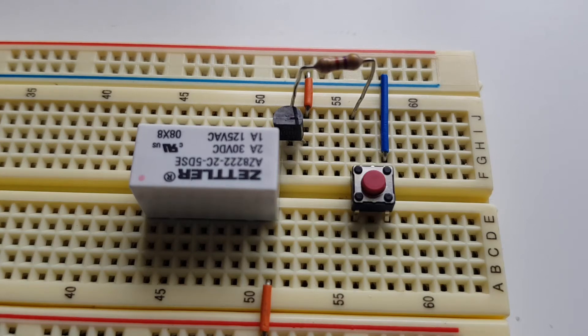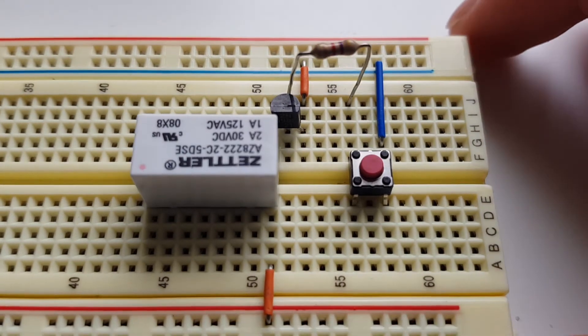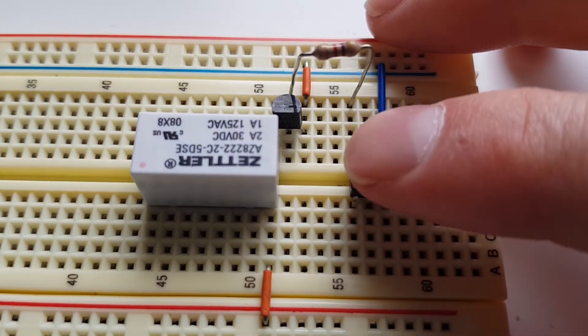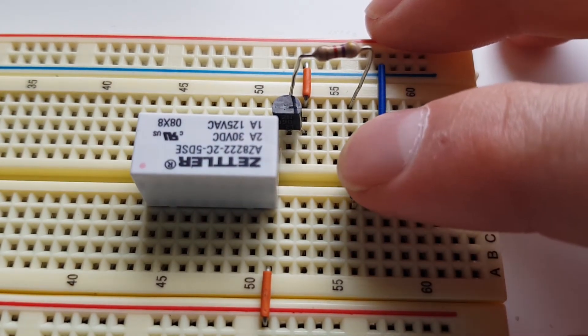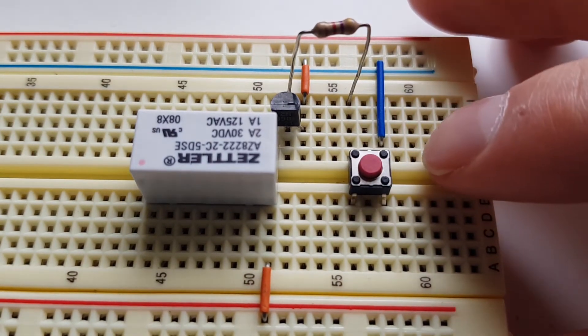Here we have a circuit, a simple transistor switch driving a small relay. When I press this button, it actuates the relay.